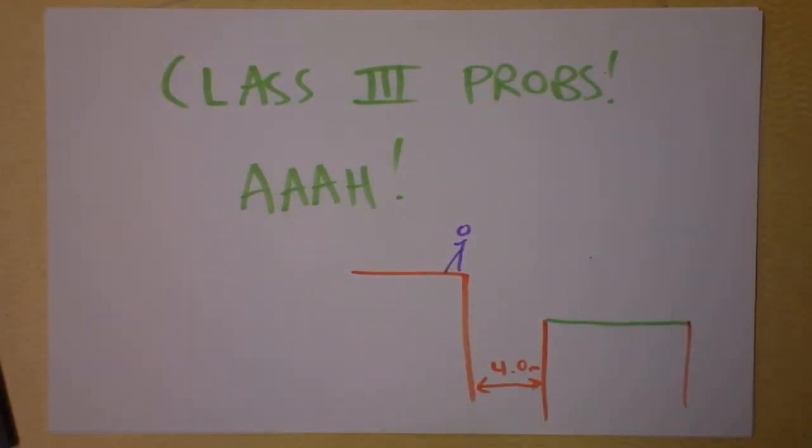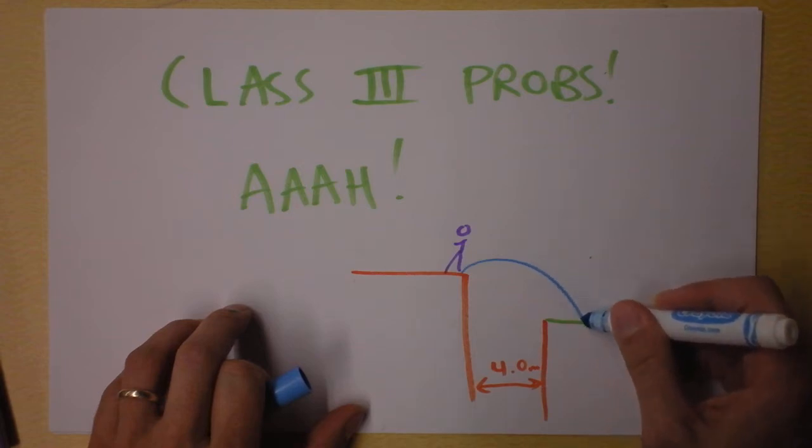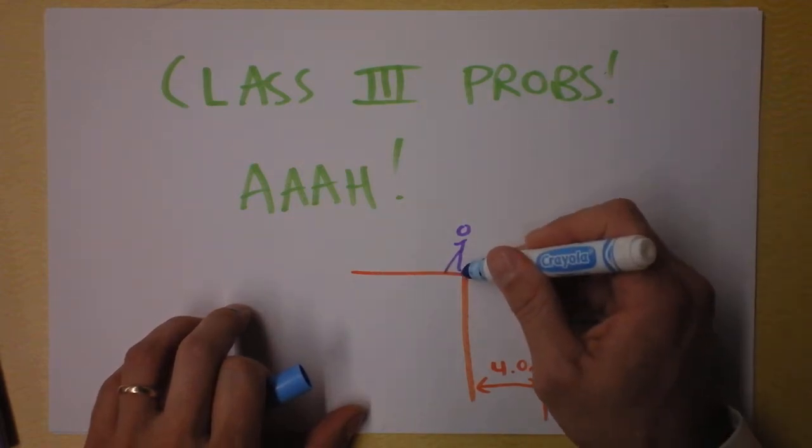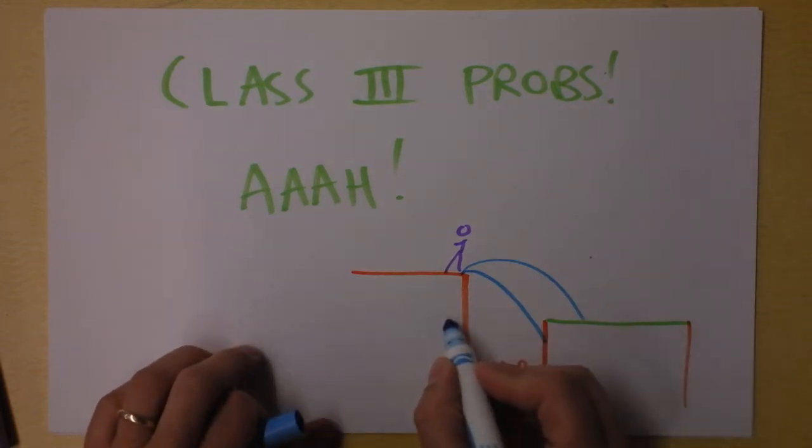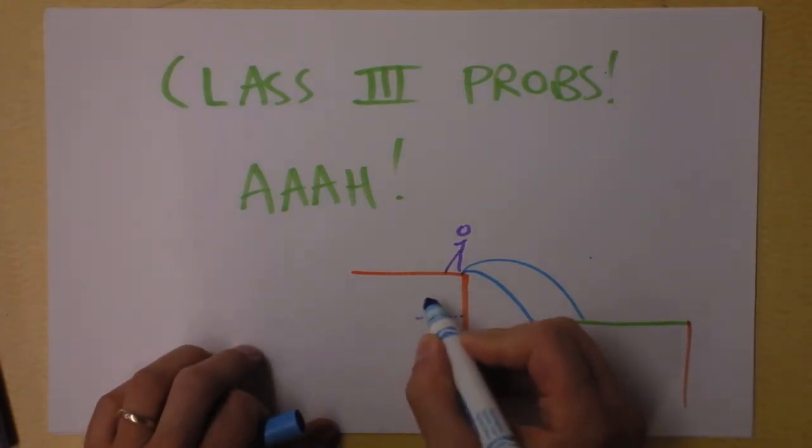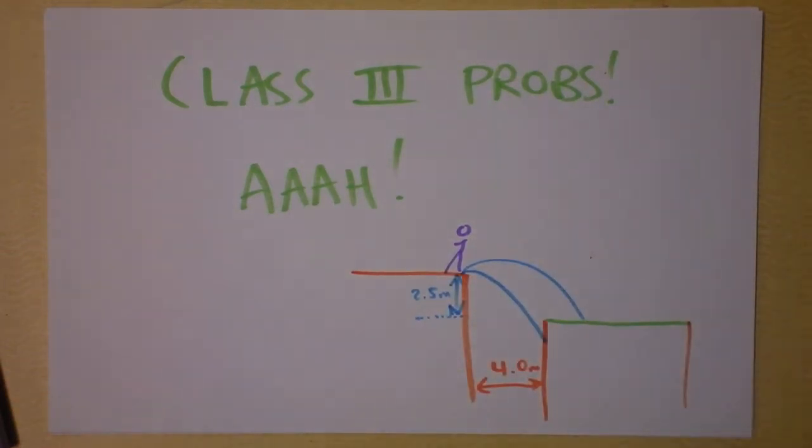And he's going to jump, and his path is probably going to be something like this. In which case he would be okay, or he's not going fast enough, and it's going to be like that. I don't know, but let's figure that out. I do know that this distance right here is 2.5 meters.